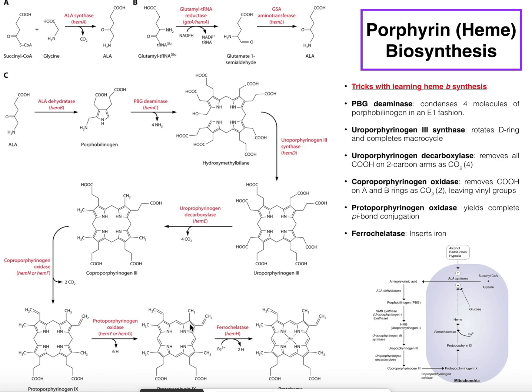The final enzyme in this scheme is ferrochelatase. This one is fairly simple — it puts an iron right here in the center of the nitrogens, and the nitrogens chelate that iron. That iron is where most of the chemistry will occur, for example the activation of molecular oxygen.